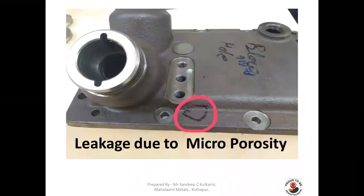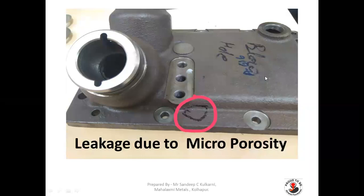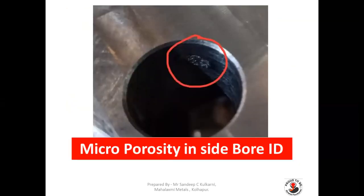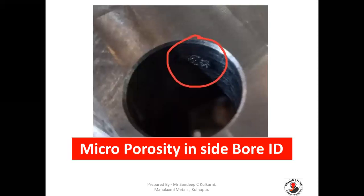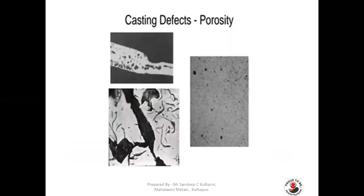Here you can see some photos regarding shrinkage defects. This picture shows micro porosity which causes leakage of the casting. Micro porosity is another type of shrinkage which happens in the casting, and to avoid leakage we have to control micro porosity. Such kind of micro porosity inside the bore or ID of the casting can also cause defects or leakages.